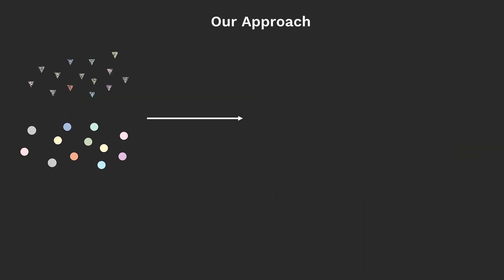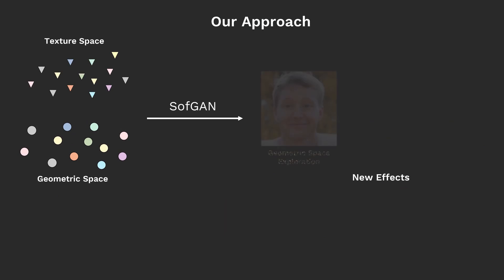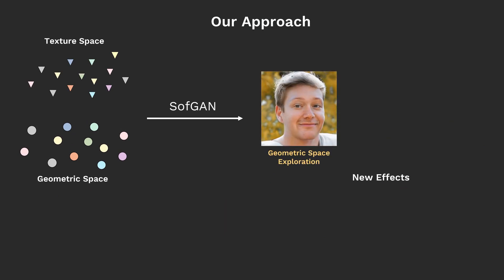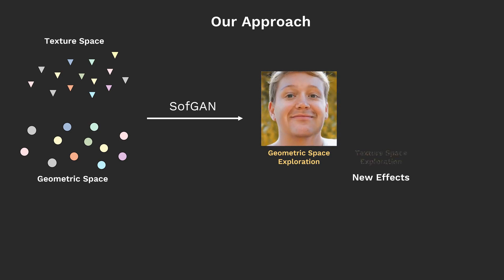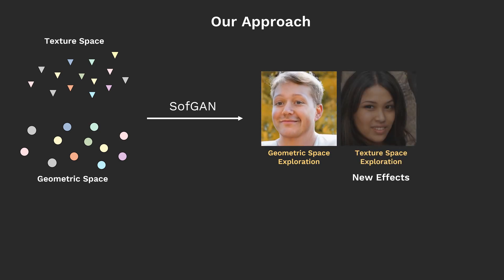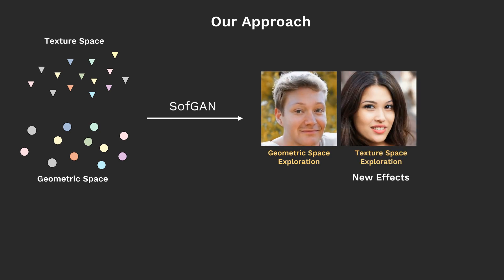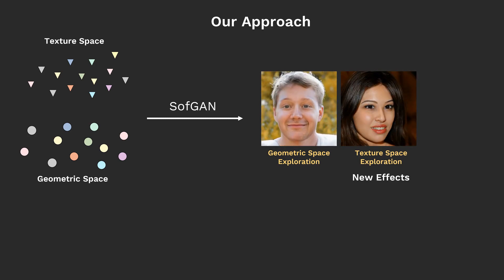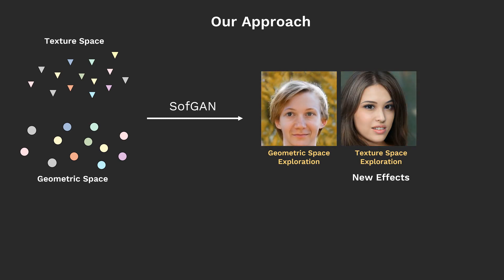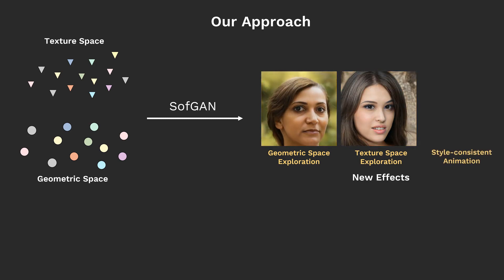To address these issues, we decompose the generation space into two individual subspaces: geometry space and texture space. We also design a novel softGAN architecture to generate images from these two spaces.